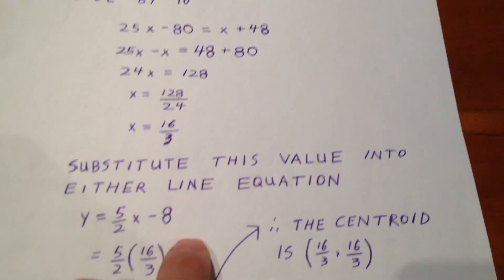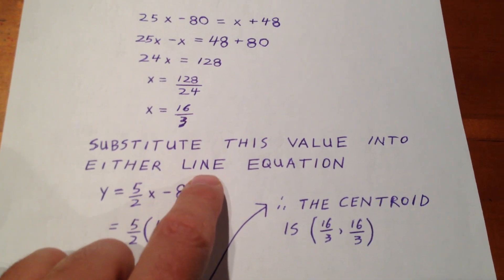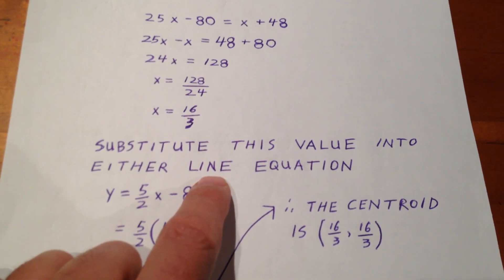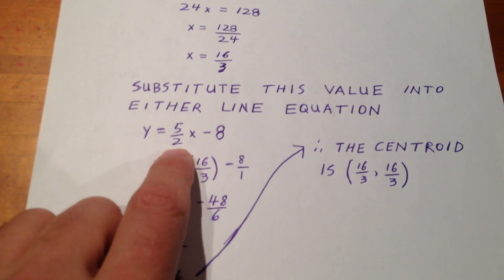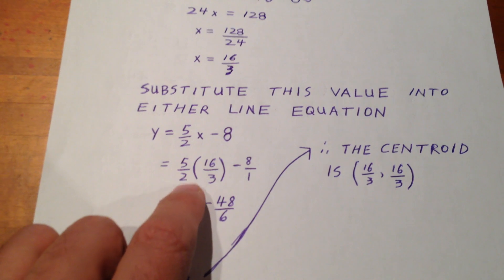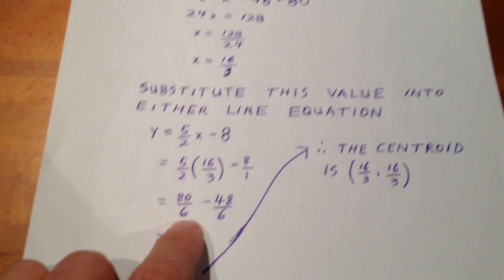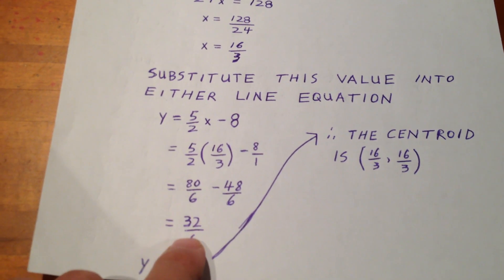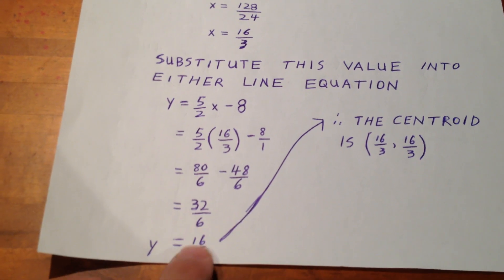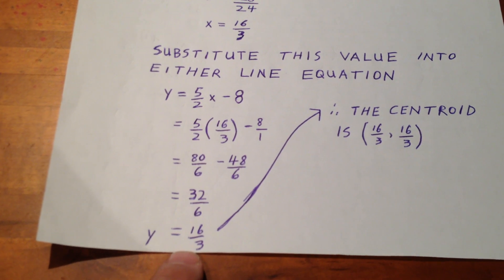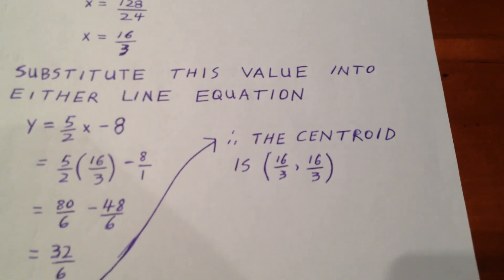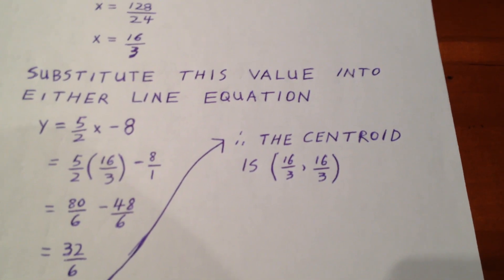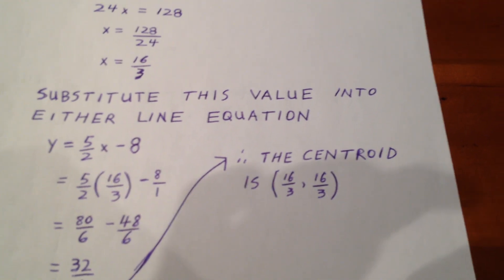We can then substitute this value into either line equation. In other words, the equation of either median. So, we chose the median equation y equals 5 halves x minus 8. Plugging in 16 thirds for x, and using our laws of fractions, we see that y will be 16 thirds as well. And so, the centroid in this case is equal, is at the point 16 thirds comma 16 thirds.